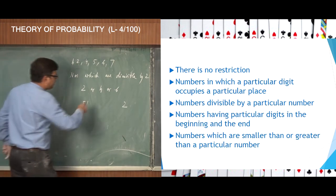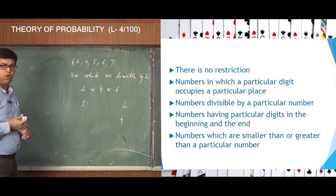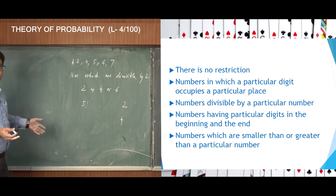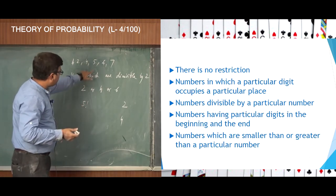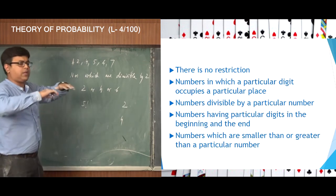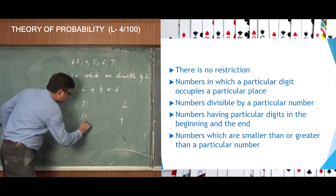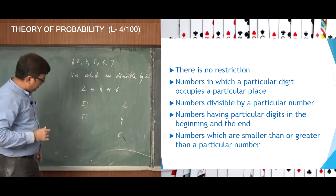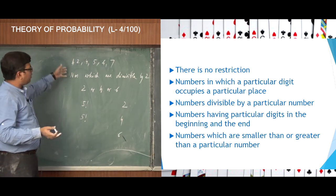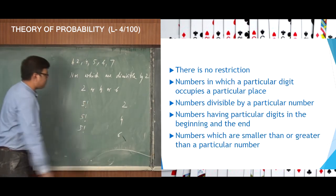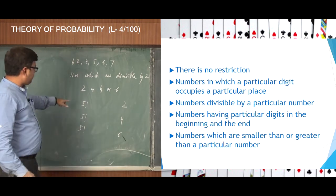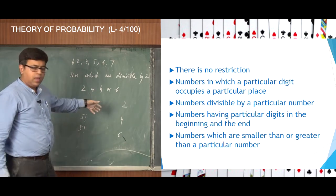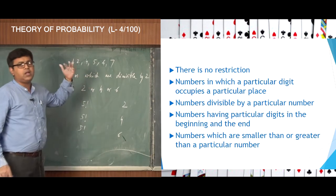Similarly, if we fix 4 in the units place, the remaining 5 digits can be arranged in 5 factorial ways. And the third possibility: fix 6 in the units place to make the number divisible by 2, and the remaining 5 digits can also be arranged in 5 factorial ways. So 5 factorial is the count of numbers ending with 2, 5 factorial ending with 4, and 5 factorial ending with 6 — all divisible by 2.